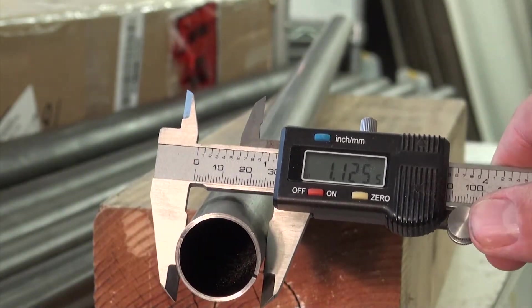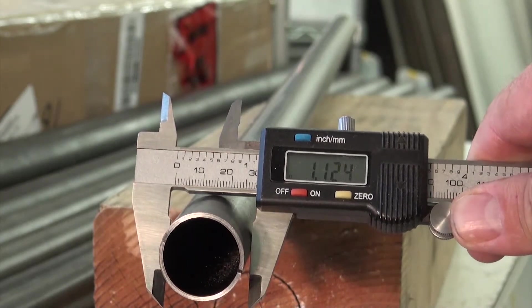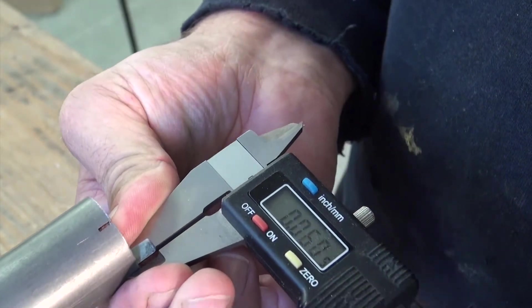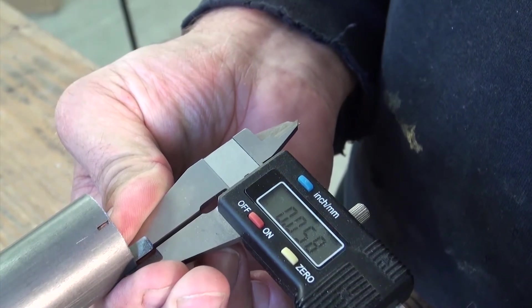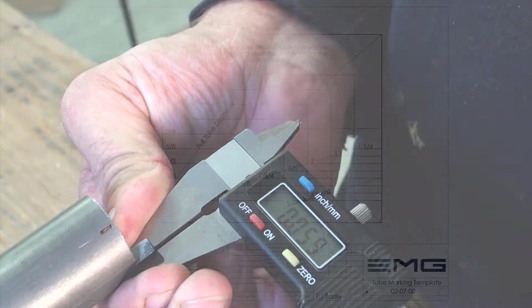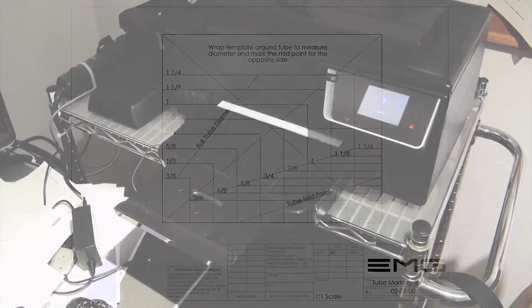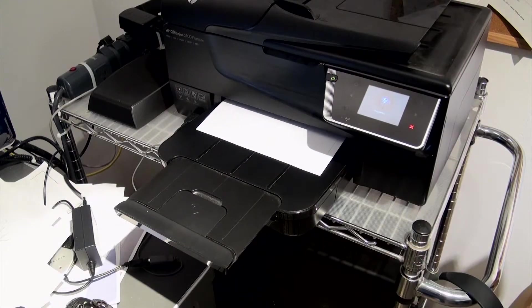We can identify the tube by measuring the outside diameter and the wall thickness with a pair of calipers. You can also use the tube marking template that is downloadable from the website.